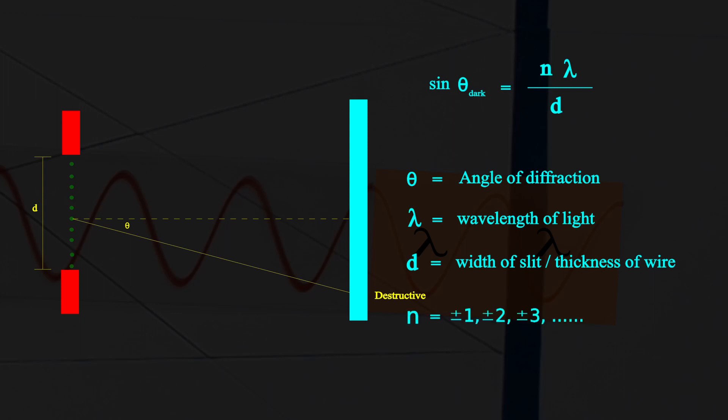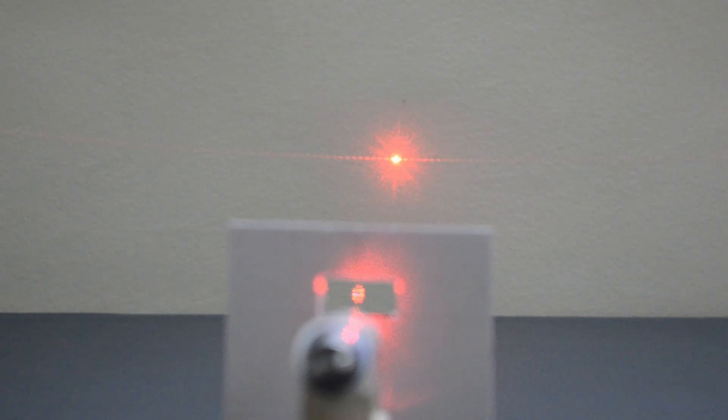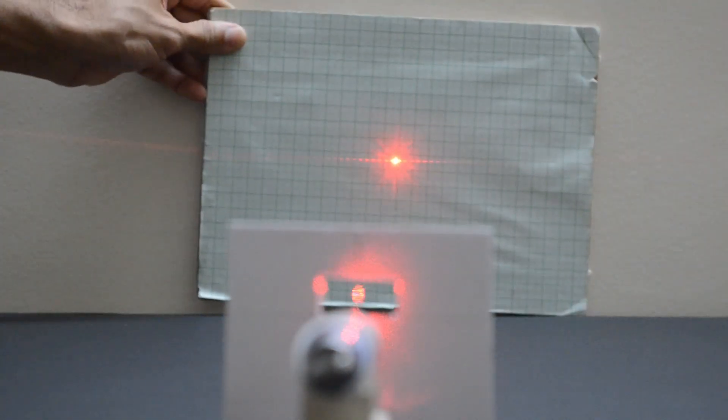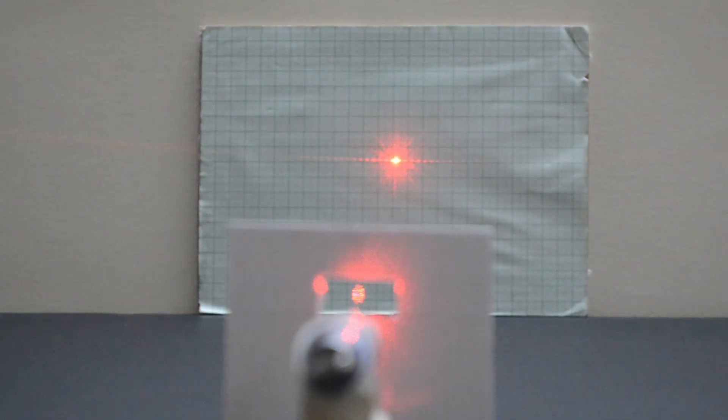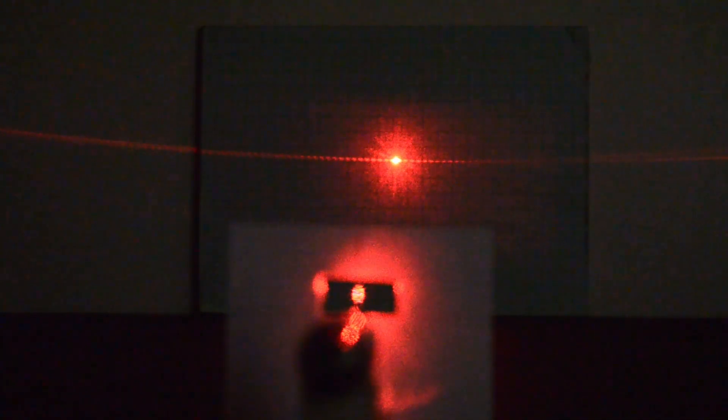Now that we know the formula, we can use this to find the thickness of the wire. Let us place a card sheet with a graph paper on it, so that we can do some measurements as well on the screen.